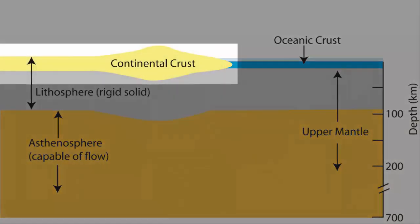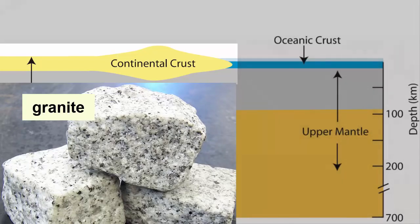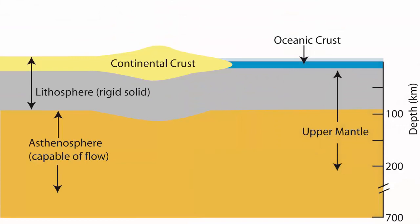Continental crust is much thicker and less dense than ocean crust. It is made out of many kinds of rocks, but its average composition is similar to that of a rock found on the continents called granite. The buoyancy and thickness of continental crust make it float high above the oceans, creating the continents.